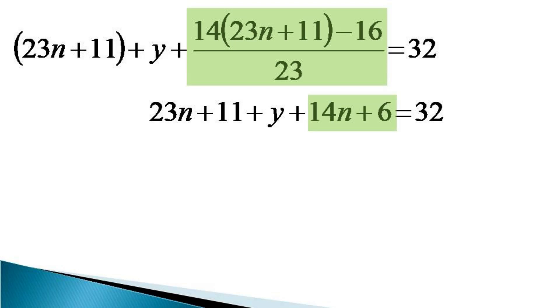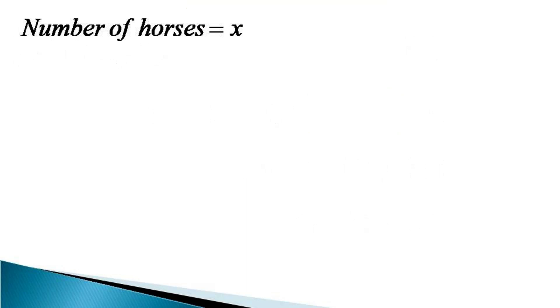We just arrange all the terms together to get 37n plus 17 plus y is equal to 32 and isolating y on one side we get the value of y as equal to 15 minus 37n. Now we have both x and y in the terms of a parameter n which is an integer. We come back to our original assumptions that is number of horses is equal to x which now we have got being equal to 23n plus 11 and number of cows y becomes equal to 15 minus 37n.